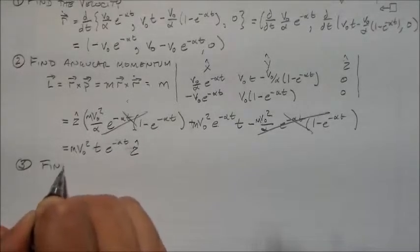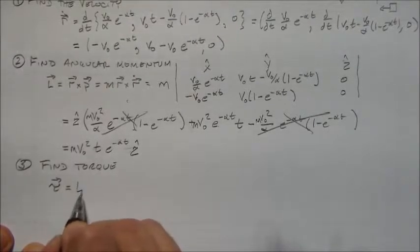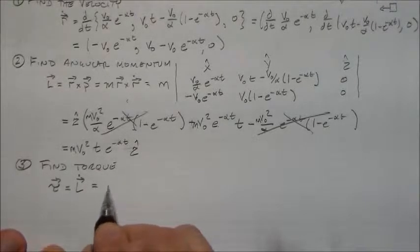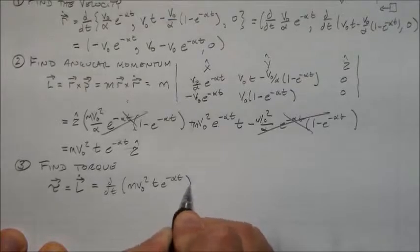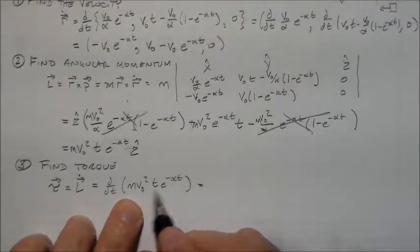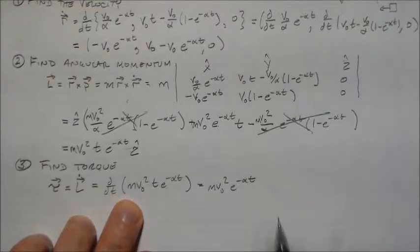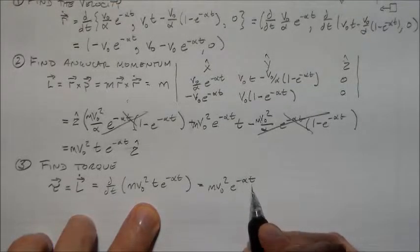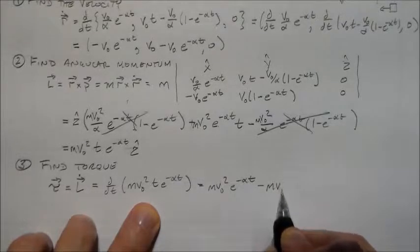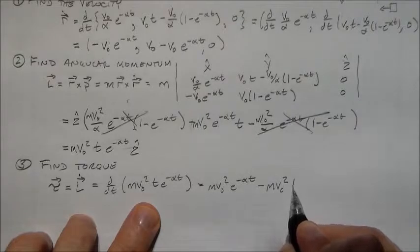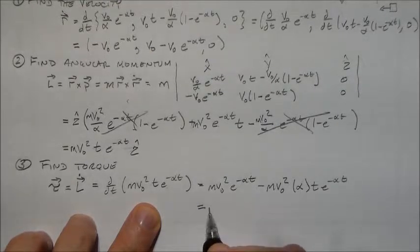And then we find the torque. You find the torque by taking the derivative. So tau is, I think, what they use in the book, is equal to L dot, which is equal to DDT times all this stuff, M v naught squared T E to the minus alpha T. So we have two terms here. So we have the first one, M v naught squared E to the minus alpha T. And then we have the other one where we have minus alpha, so we have minus M v naught squared times alpha times T times E to the minus alpha T.